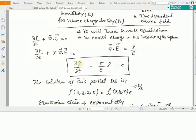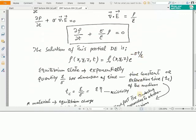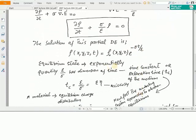This is a differential equation in terms of charge density rho. The solution of this partial differential equation is rho of x, y, z and t equals rho naught of x, y, z times exponential minus sigma t over epsilon. Here you can see in the solution, equilibrium state is approached in exponential manner.